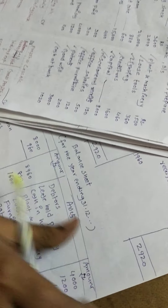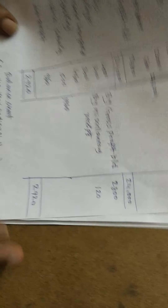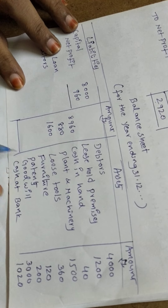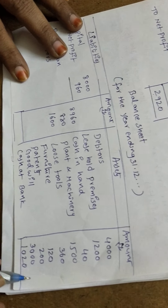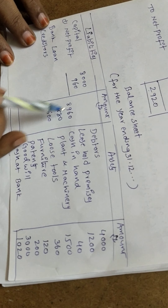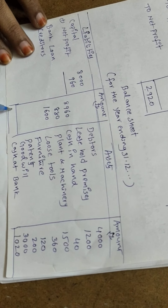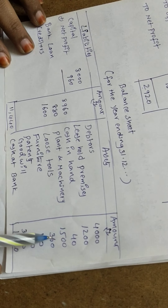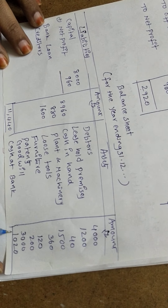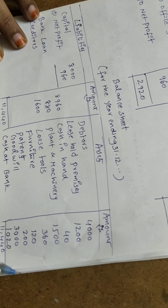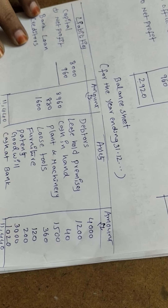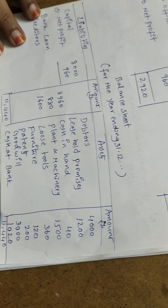We have recorded all items in the balance sheet. Now we add both sides. Liability side total: 11,440. Asset side total also: 11,440. Both sides tally, which means our balance sheet is correct.